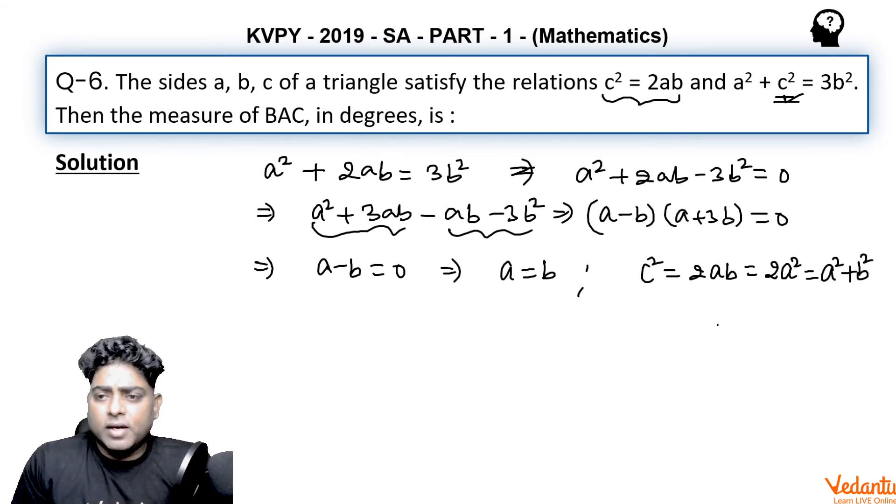So we can say that c² equals a² plus b² means triangle is right angle triangle. And right angle isosceles in fact, because A is equal to b. So in right angle isosceles triangle, what are the measures of angles?